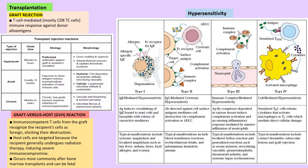On this slide we can see different types of grafts: autograft, isograft, allograft, and xenograft. Very importantly, cytotoxic killer T cells are responsible for graft rejection. We can have hyperacute, acute, and chronic graft rejection. Graft versus host reaction is when the immunocompetent T cells of the donor attack the immunocompromised cells of the recipient. This can be lethal, particularly after bone marrow transplants.